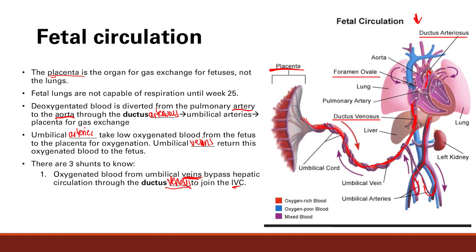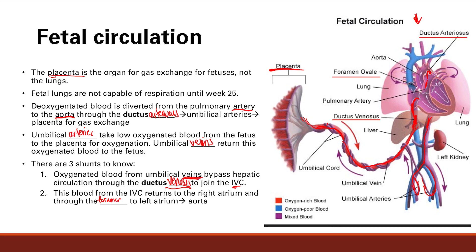When this oxygenated blood reaches the right atrium, it's going to go through another shunt called the foramen ovale, which connects the right atrium and the left atrium. As you can see, the blood shoots through and, with a hole there, it goes from the right atrium to the left atrium, over to the left side of the heart, and then out the aorta. From there it can go up all the branches to deliver oxygenated blood to the brain and to the heart. That's why we have the foramen ovale.